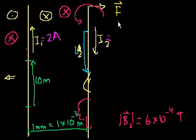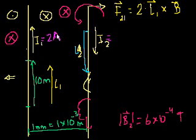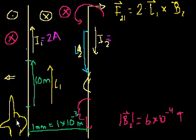The net force on wire 1 caused by wire 2 is equal to the current in wire 1 — 2 amperes — times the vector L1, cross the magnetic field B2. L1 is going upward, and B2 is going into the page on the side of wire 1. Using the right-hand rule: index finger along I1, middle finger into the page — my thumb points outward. So the net force direction on wire 1 is outward, confirming repulsion.